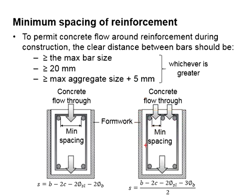The spacing is now the width of the beam, minus two covers from both sides, minus the stirrup diameter, and minus three reinforcement bar diameters, divided by two spacings.